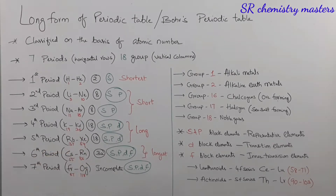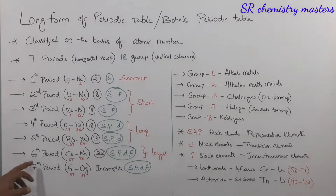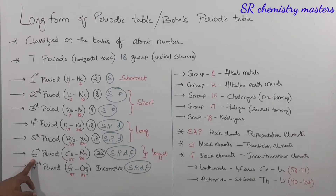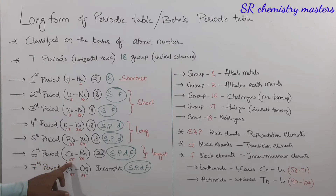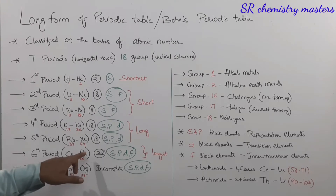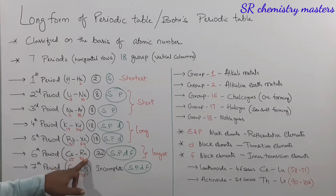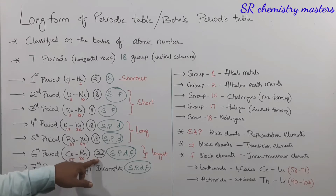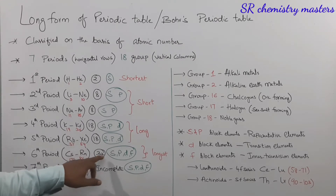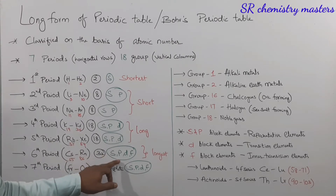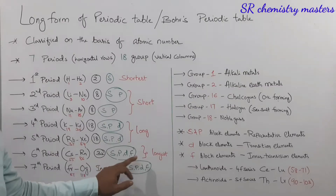The sixth period is considered as the longest period of the periodic table, which consists of elements from cesium to radon. Here we have 32 elements in this period, which includes elements from the s, p, d, and f blocks.